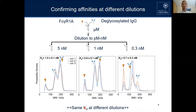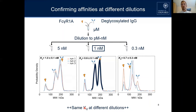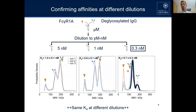We do a dilution series — measuring the same sample at different dilutions. At high concentration you have mostly complex antibody; once you dilute down it starts to fall apart, and at low concentration you have mostly unbound species, which is exactly what you would expect. You can already visually recognize this difference and confirm it in terms of numbers.